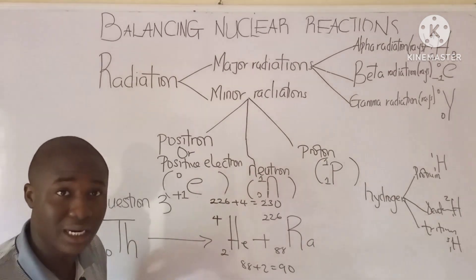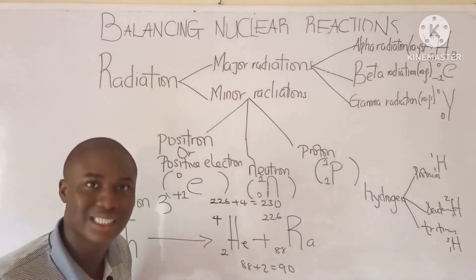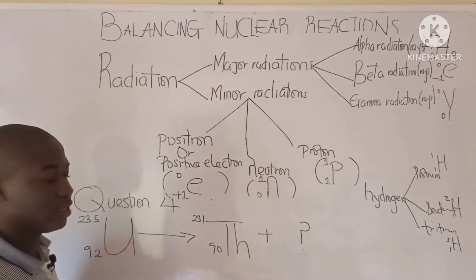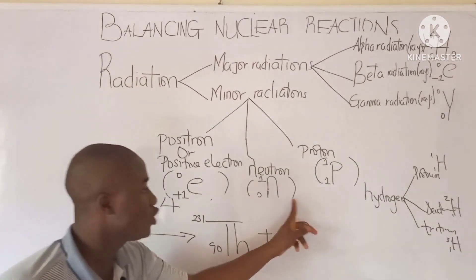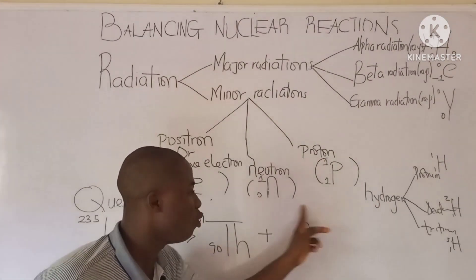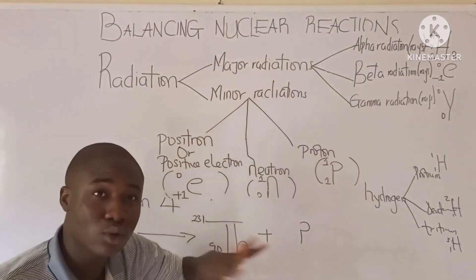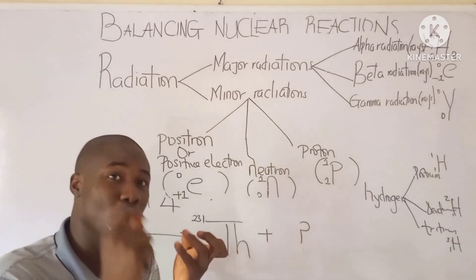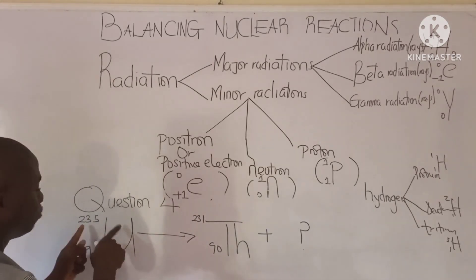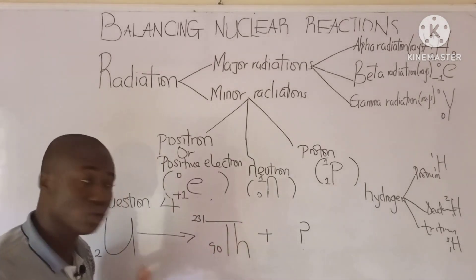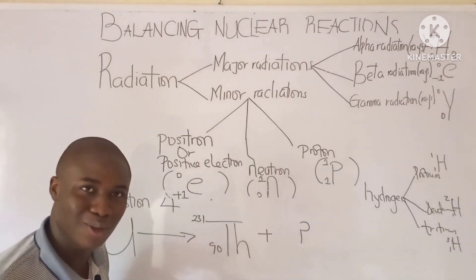You can see how questions like this have been tackled — they are all very easy. The next question you'll be solving yourself, and you'll provide the answer in the comment section below. The question says: identify the unknown radiation or atom. This is uranium-235 reacting, and this is thorium-231. Do well to solve and provide the answer in the comment section.